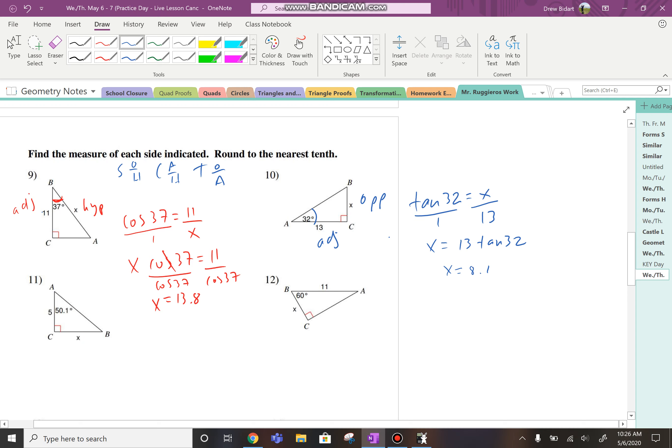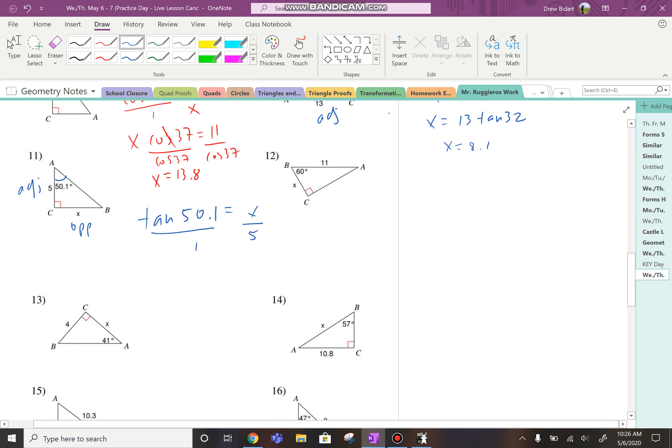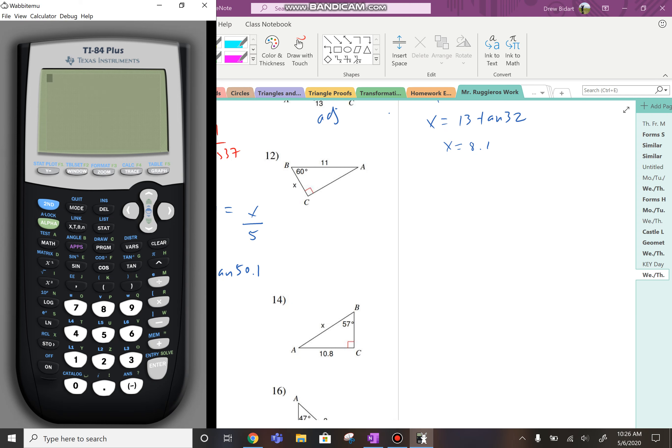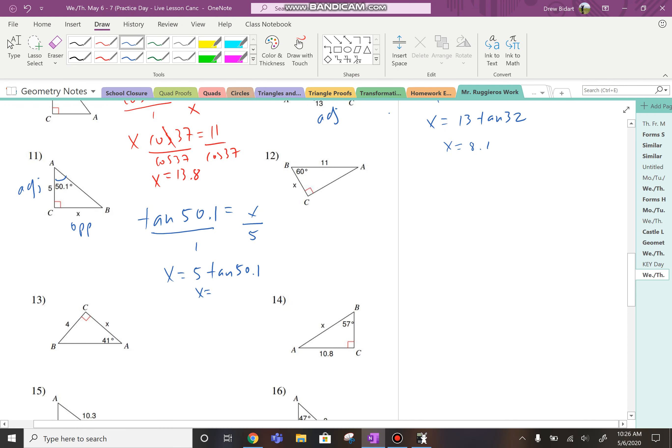Okay, in question 11, from the perspective of the angle 50.1, X is opposite and 5 is adjacent. So that should be tan again. The tan of the angle equals the opposite over the adjacent. So we type that in: 5 tan 50.1, and that should be about 5.97 to the nearest tenth. Technically, that does become 6.0.